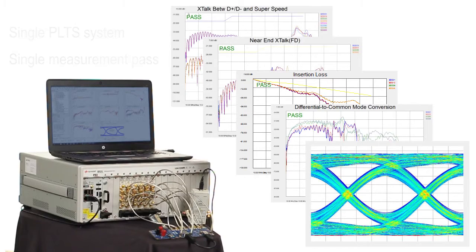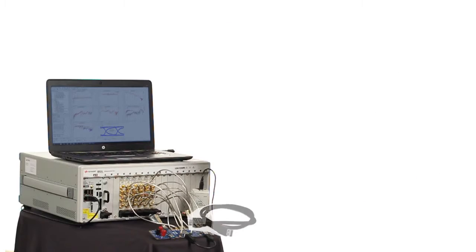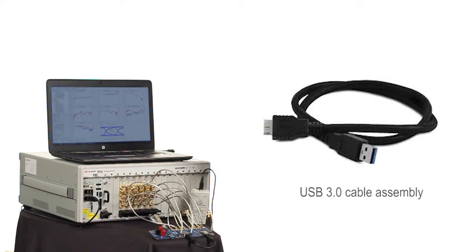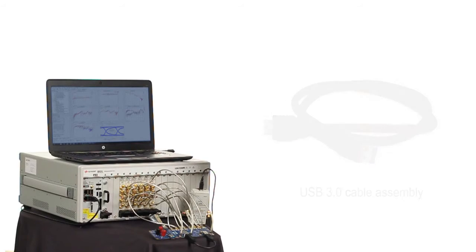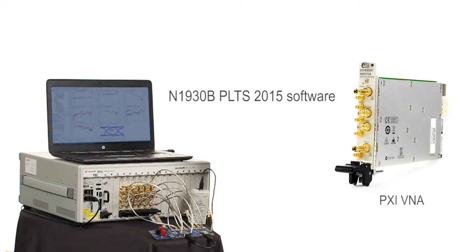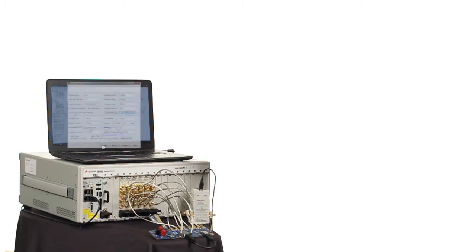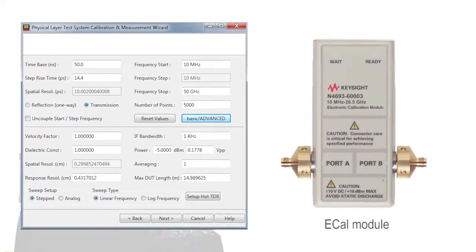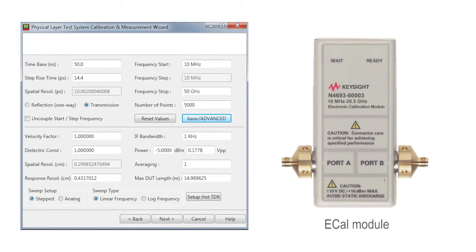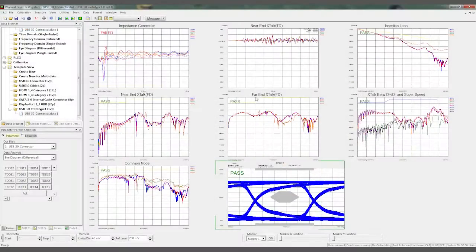In order to solve this multi-domain, multi-port measurement problem, here's an example of the USB 3.0 cable assembly. We drive the VNA with a laptop running PLTS 2015 software. We first calibrate with an eCal so the reference plane is at the end of the test cables. Once the 12-port measurement is complete, the PLTS software can perform all advanced calculations to display each parameter for characterization.